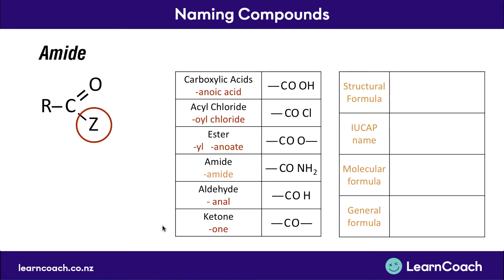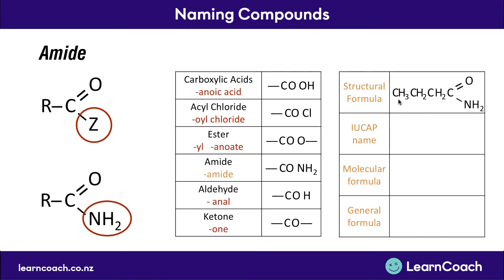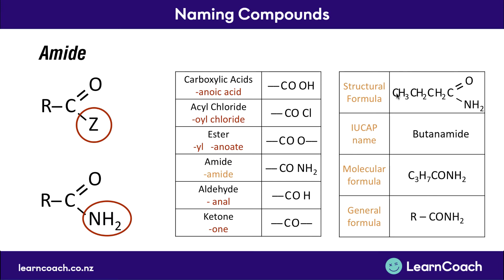Next is an amide. The amide Z group is NH₂. One example has a chain of four carbon atoms, the double bonded oxygen, and the NH₂ group attached replacing the Z group. To name these, we add amide on the end of the name of the chain — four carbons gives the prefix but, and then we add amide, so it's butamide. The molecular formula has three carbons and seven hydrogens on the extra chain, with CONH₂ on the end. The general formula is R-CONH₂.